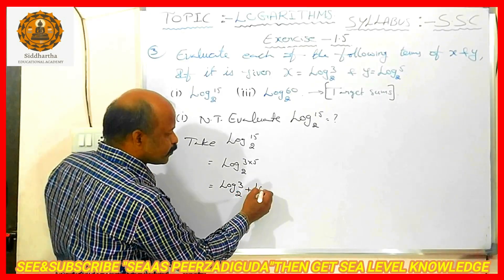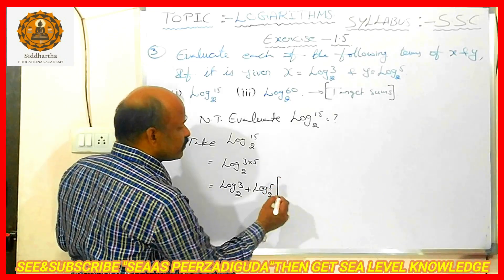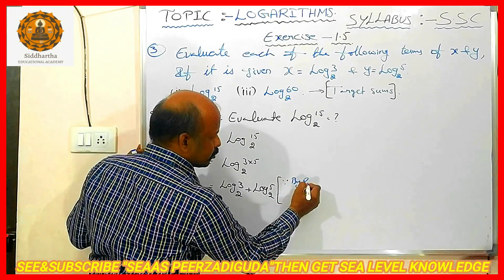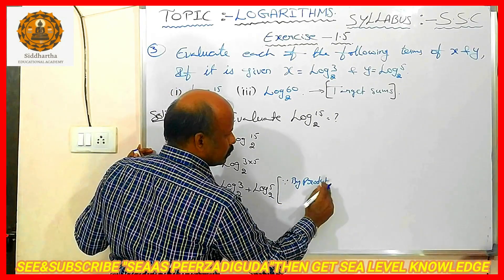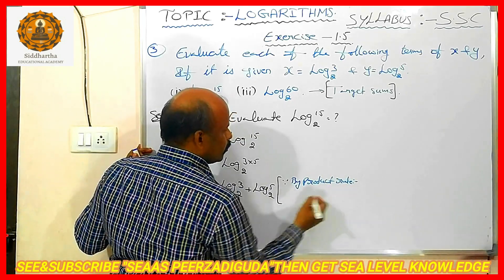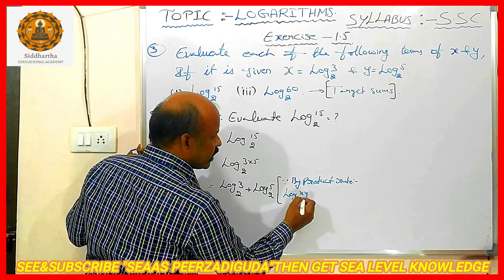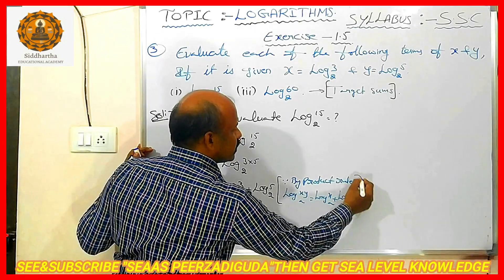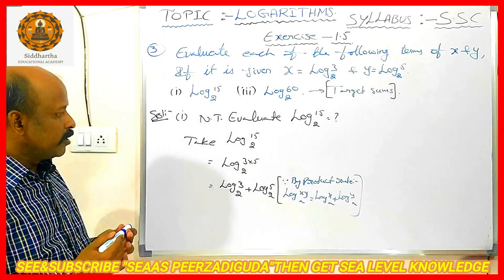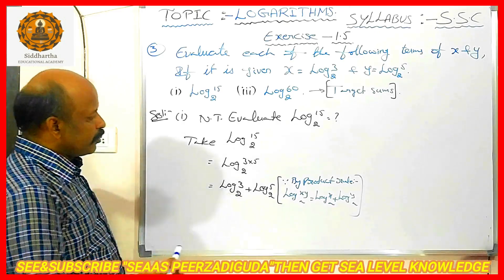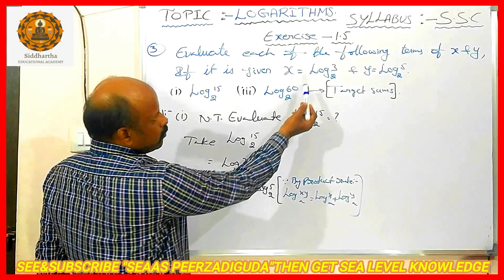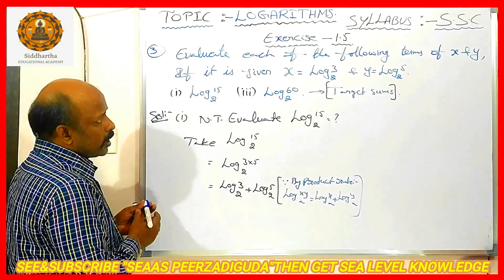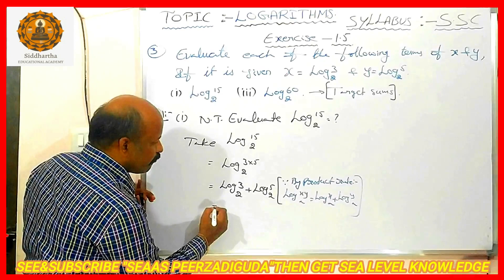So, log 3 base 2 plus log 5 base 2. Which formula I used over here? By product rule. The product rule formula is: log(x·y) base A is equal to log x base A plus log y base A. By using this formula, I split it into two parts. Already we know log 3 base 2 value is x, log 5 base 2 value is y. In place of log 3 base 2, I am going to write x. In place of log 5 base 2, I am going to write y.